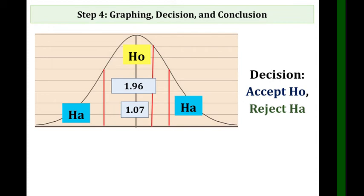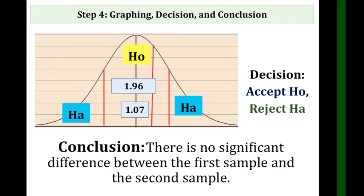How about the conclusion? To conclude, go back to step 1. What is our HO? Our HO is there is no significant difference between the first sample which is 70 and the second sample which is 58. Therefore, that's the conclusion. Whatever you accept, that will be your conclusion. Just go back to step 1 and get this statement and put it in the conclusion.